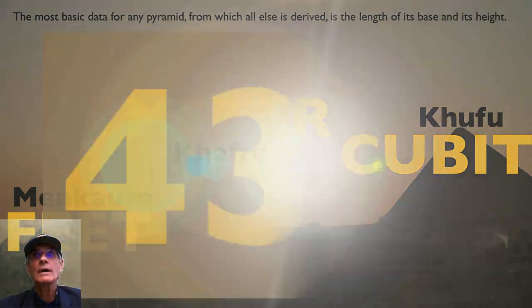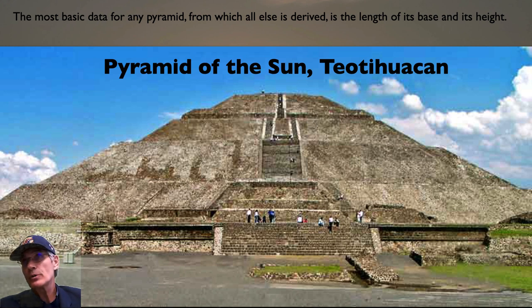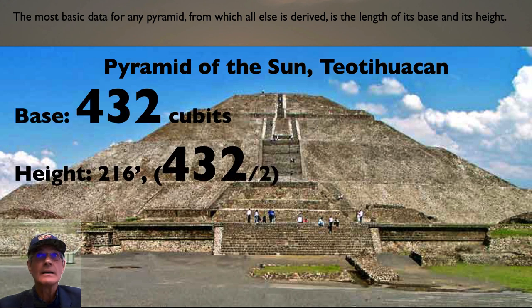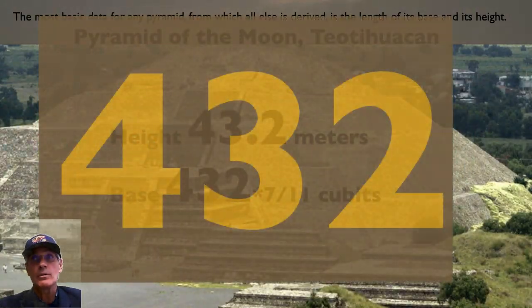And then Robert did a post right after that, showed the Pyramid of the Sun in Teotihuacan. The base is 432 cubits, and the height is 432 divided by 2 in terms of feet. The Pyramid of the Moon, same thing. The height is 43.2 meters. And the base, the same as the Great Pyramid's height, 432 times 7-11. Unbelievable.